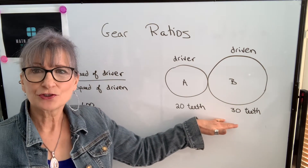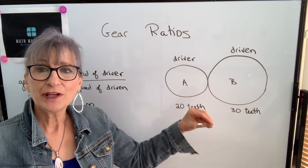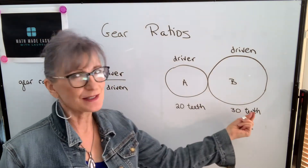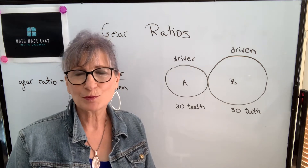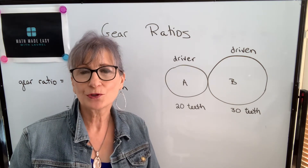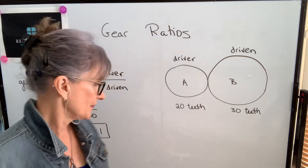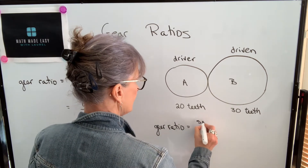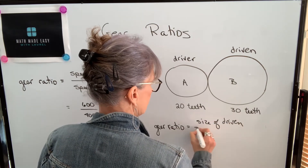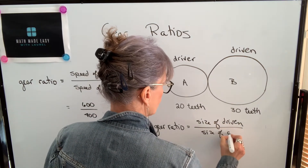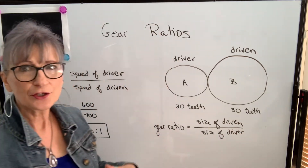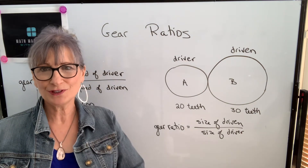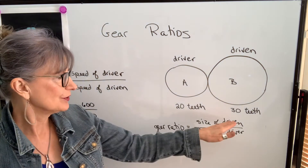You will often be asked to find gear ratios without knowing speeds, and we can find gear ratios using the sizes. But be careful — you can't simply write the speed of the driver to the speed of the driven using sizes. It's not a direct proportion; it's an inverse proportion. So we actually have to inverse the order when we're using the sizes. Our gear ratio can be calculated by taking the size of the driven divided by the size of the driver.